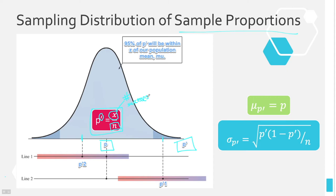For sample means, we knew it would be a normal distribution if we had a sample size of at least 30 — that's the central limit theorem from the previous chapter. For proportions, we need at least five successes (x ≥ 5) and at least five failures (n minus x ≥ 5). If we have at least five failures and at least five successes, the sampling distribution of sample proportions will be a nice normal bell-shaped curve.